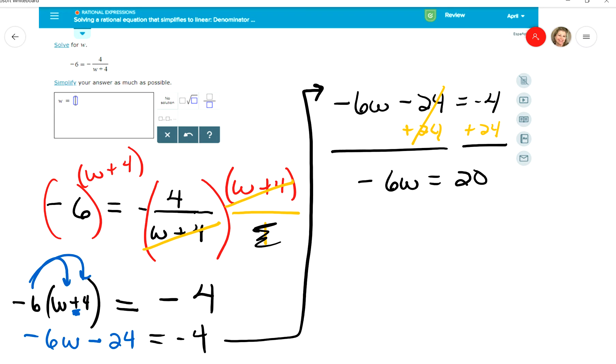And then to solve for W, I am going to divide off the negative 6, because it's multiplied onto that W, so the opposite of multiplying is dividing, and I'll divide this side by negative 6. Negative 6 over negative 6 ultimately becomes 1W, which is just W.